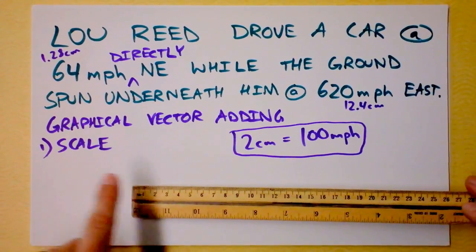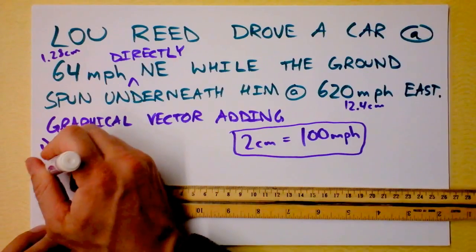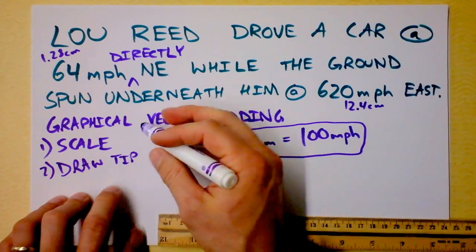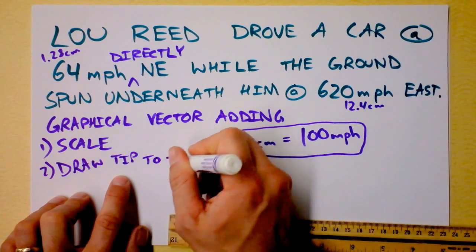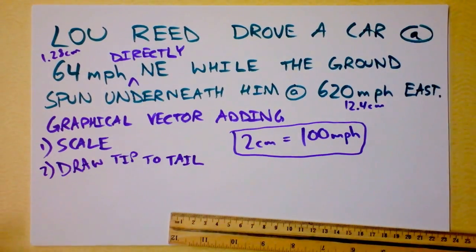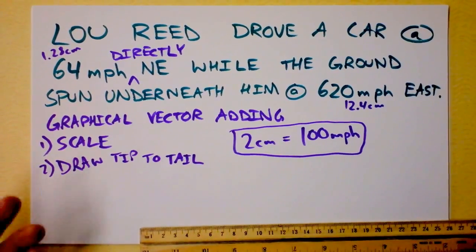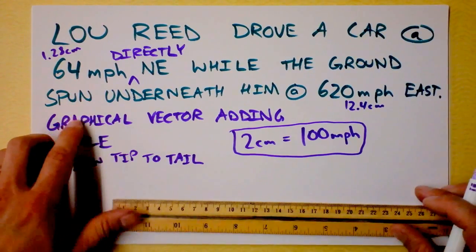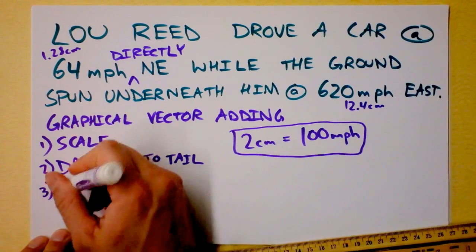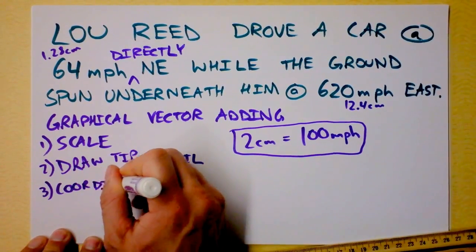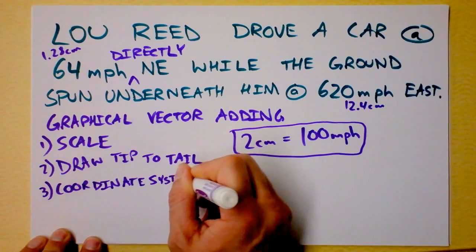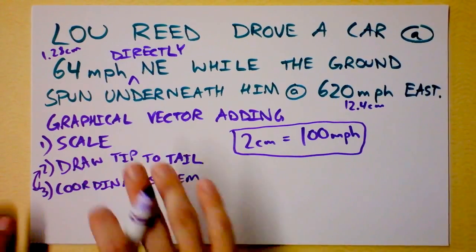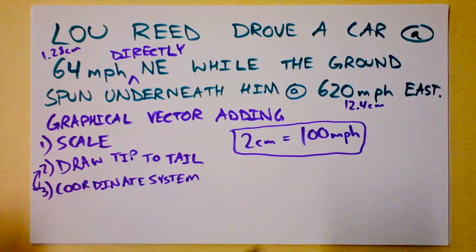Here's my plan: draw tip to tail. The tip of a vector and the tail of a vector — drawing them tip to tail shows one plus the other. I'll choose to draw the 64 mph directly northeast first. I need to establish a coordinate system showing north and east before I can draw them tip to tail.